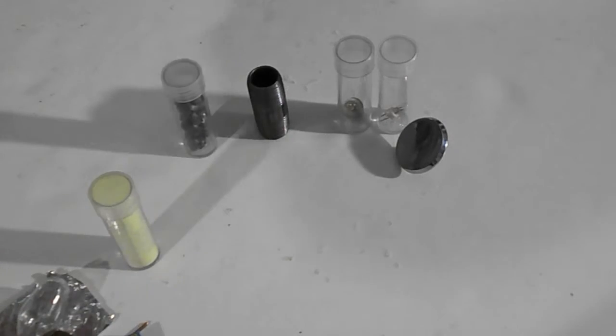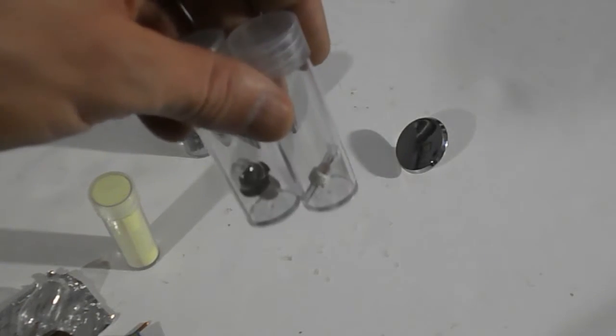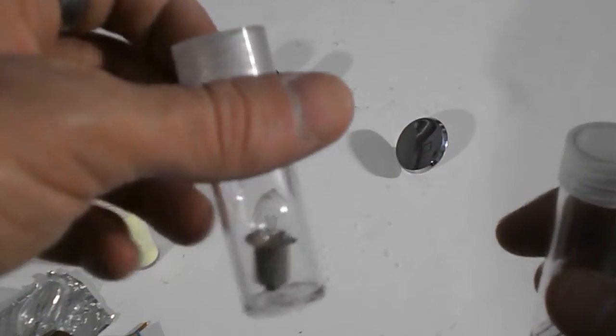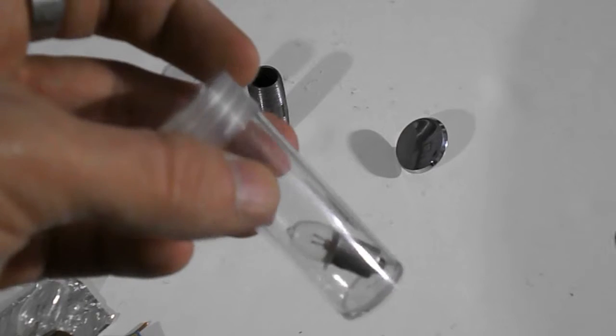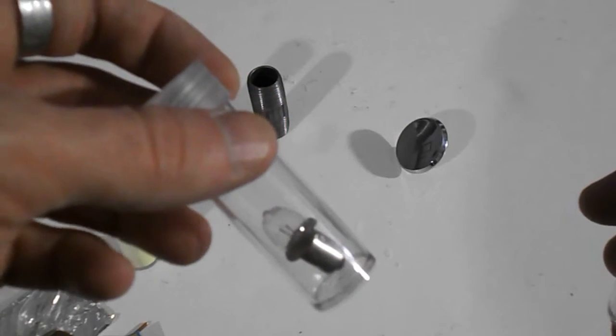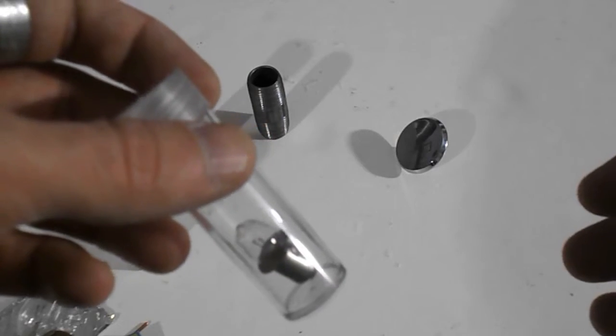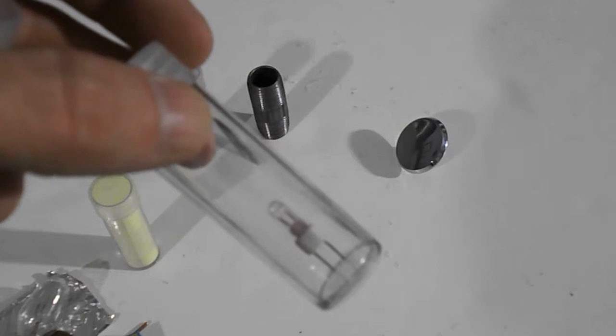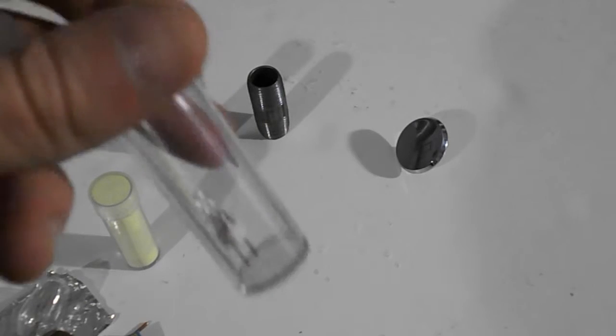Now speaking of noble gases and lightbulbs, you can get two more of them by looking at flashlight bulbs. This is a krypton bulb here. You have to read the label on the package, but krypton bulb is filled with krypton gas, and this is a xenon flashlight bulb, which is filled with xenon gas.